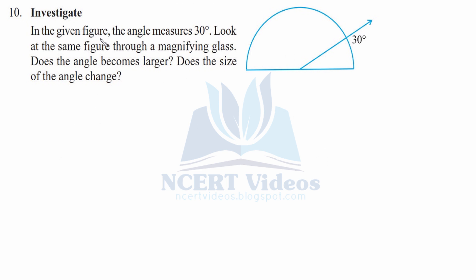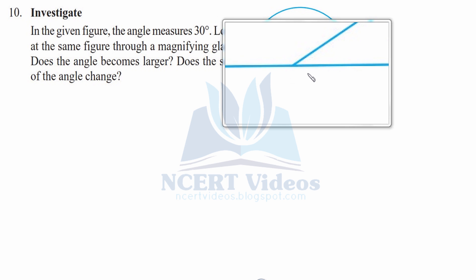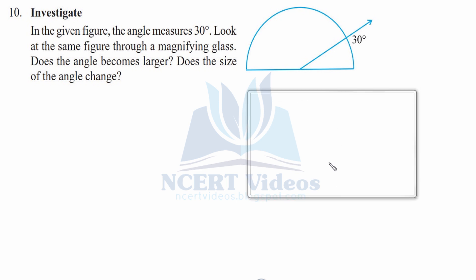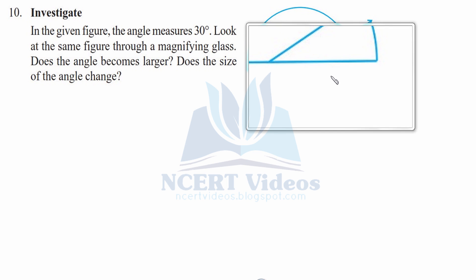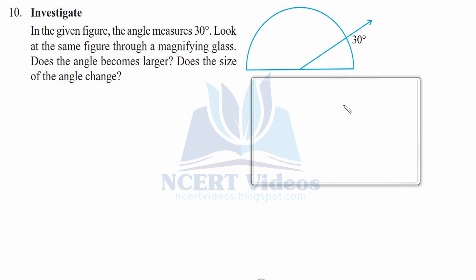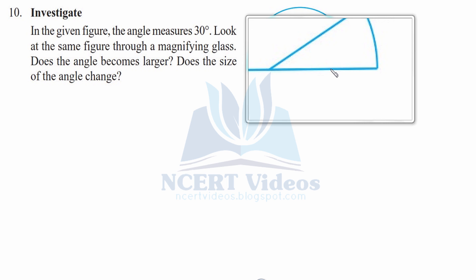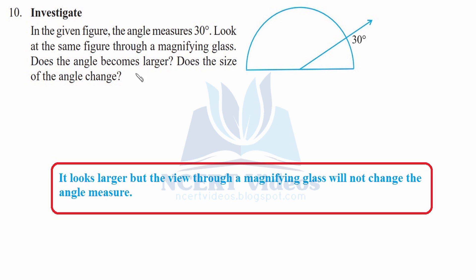Question 10: investigate — in the given figure, the angle measures 30 degrees. Look at the same figure through a magnifying glass: does the angle become larger? Does the size of the angle change? Using a magnifying glass, you can see that the angle remains the same — however it appears to be larger. The size of the angle doesn't change; it just seems larger, but the actual measure is still 30 degrees. The view through the magnifying glass will not change the angle measure.